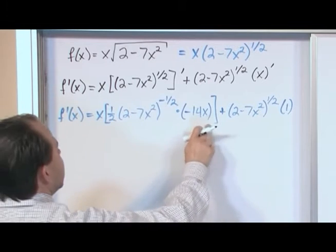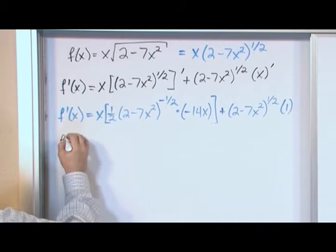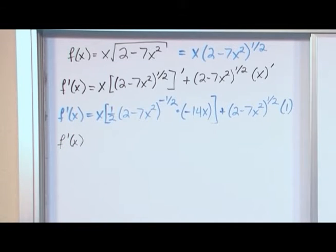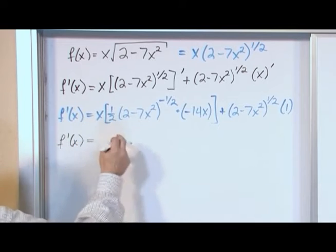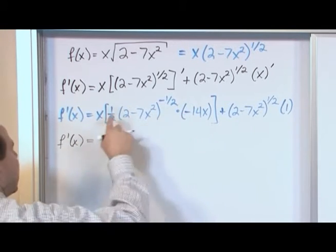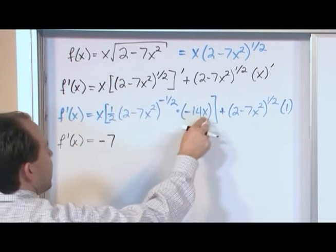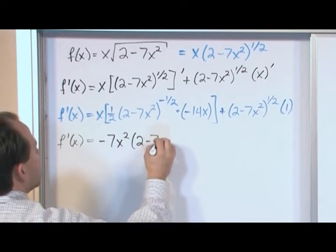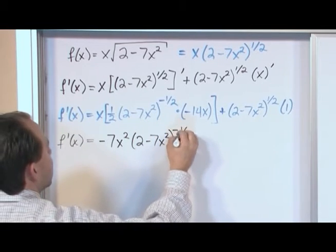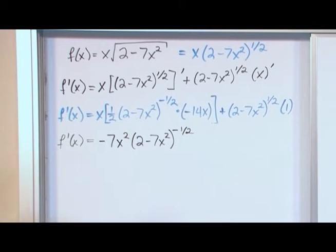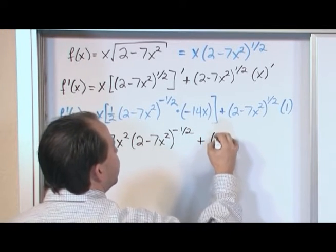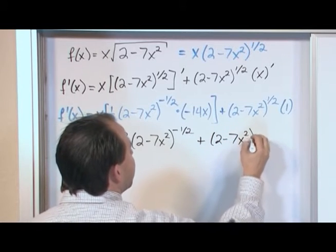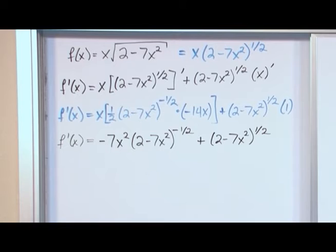So what we need to do here is combine everything that we have. f prime of x, 14 divided by 2 is 7, we have a negative here, so we'll have negative 7. x times x gives me x squared. And then we have (2 minus 7x squared) to the negative 1/2. And then over here we have (2 minus 7x squared) to the positive 1/2. So we have negative 7x squared (2 minus 7x squared) to the negative 1/2 plus (2 minus 7x squared) to the positive 1/2.